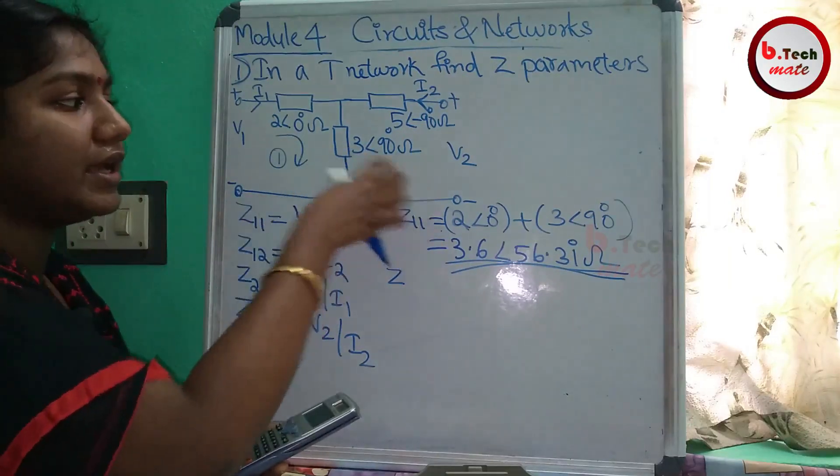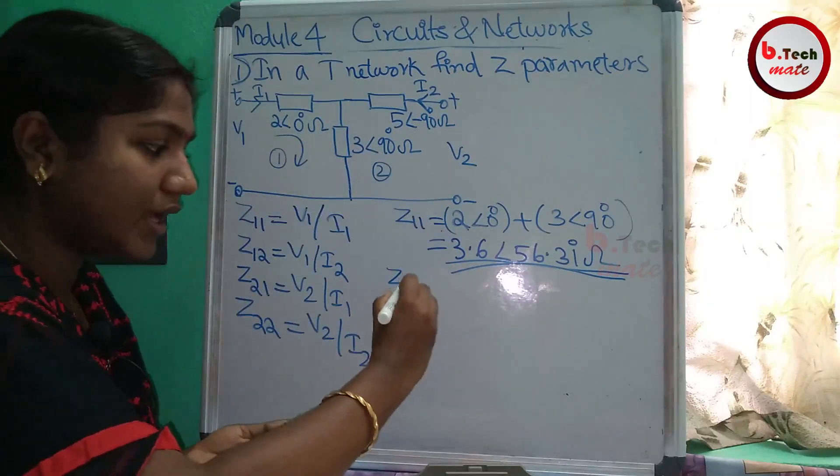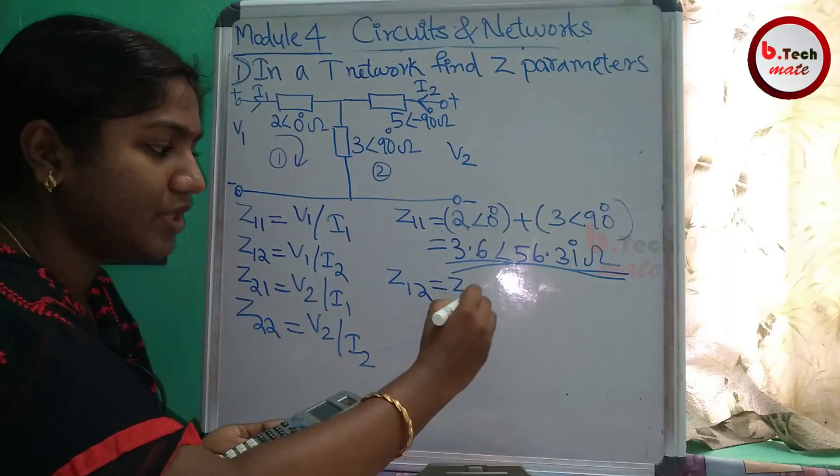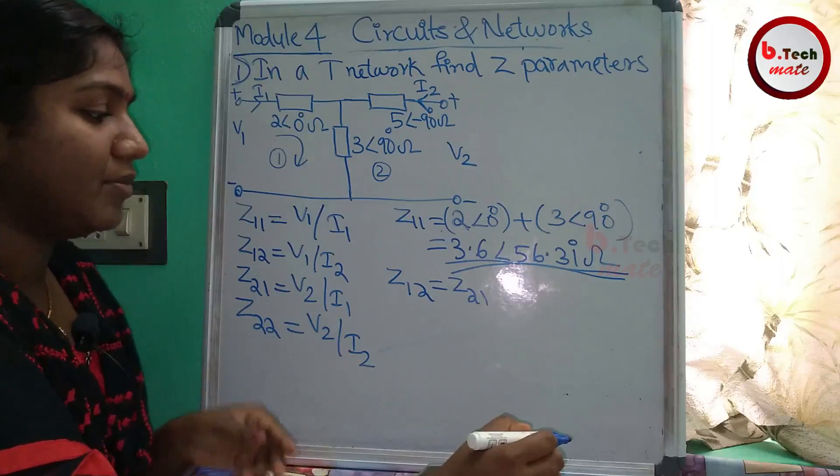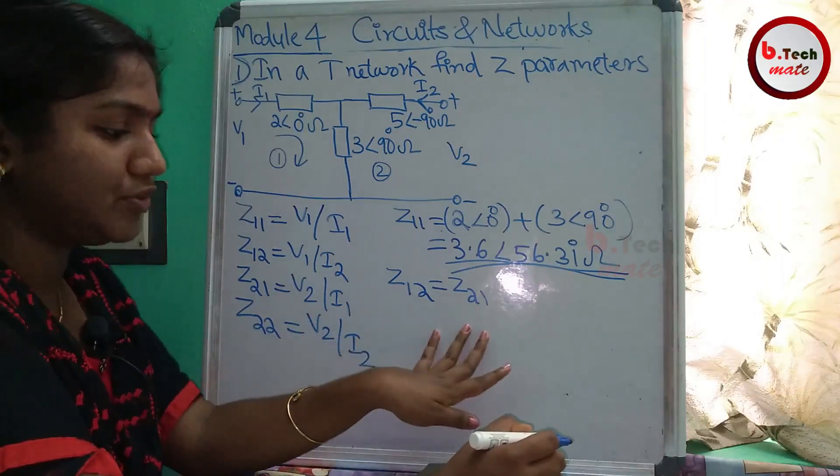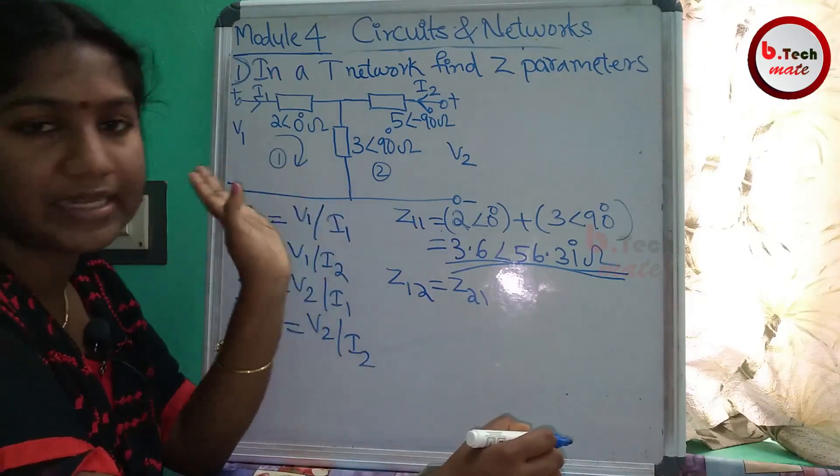Now this is the T-Network. So in the network, Z1 and Z2 are symmetric. Z1 and Z2 are equal. Z1 and Z2 are the same in T-Networks.